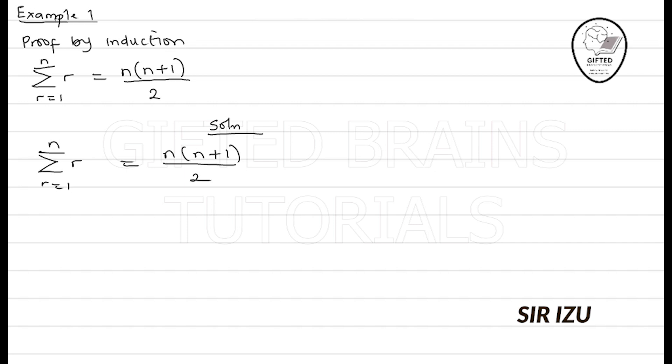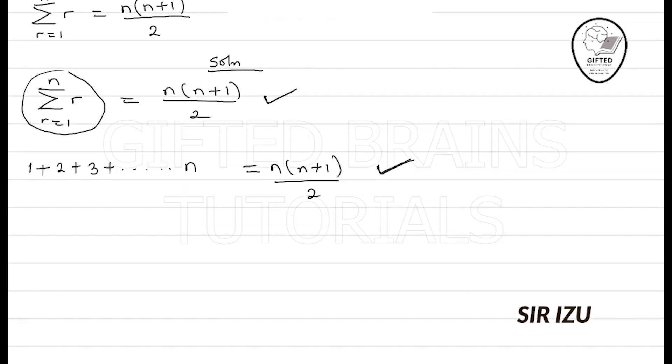The question says summation of r, starting from r equals 1. So I write r equals 1, then progressionally move from 1 to 2, 2 to 3, and so on till n. That's what this side of the question means, and it equals n times n plus 1 over 2. Some questions give you this form directly, while some give the sigma form. If it's given in sigma form, express it in expanded form before solving.